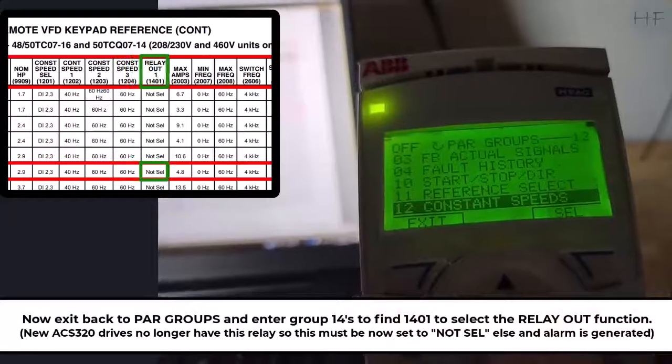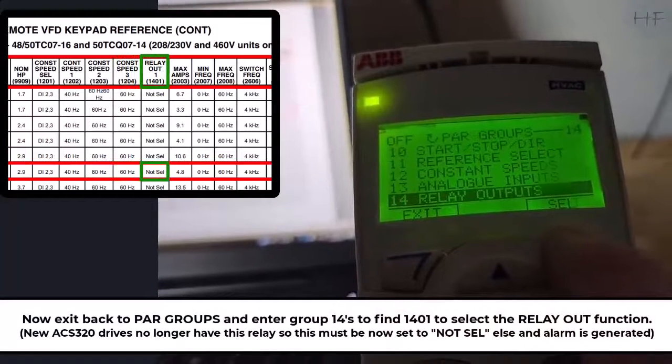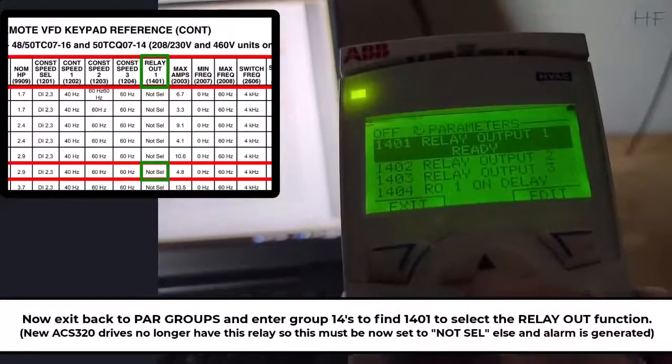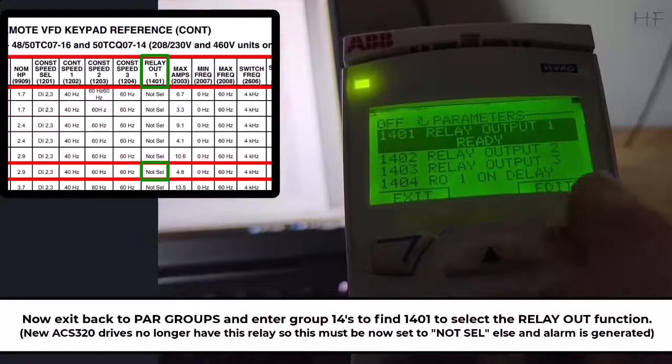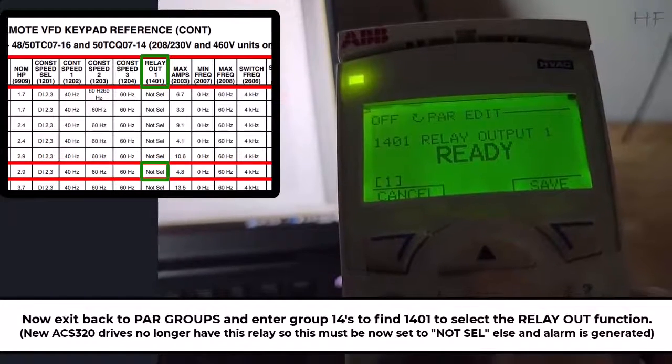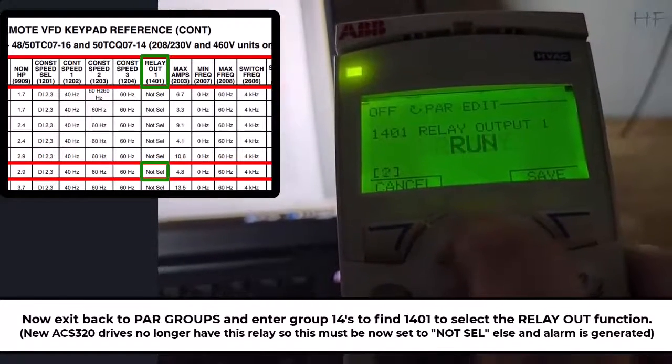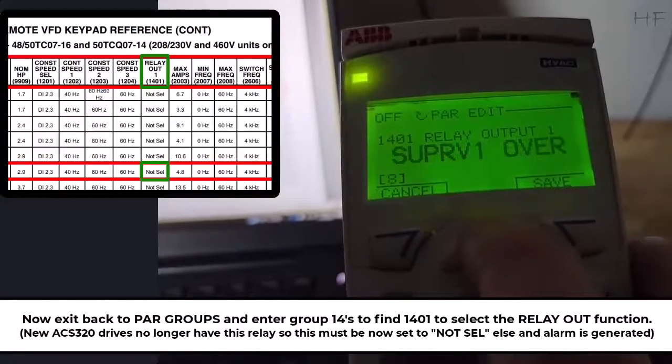Now exit back to parameter groups and enter group 14 to find parameter 1401 and select the relay output function. Note that newer ACS320 drives no longer have the relay so this must be set to not selected, else an alarm is generated.